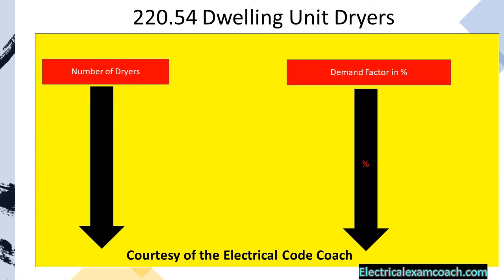When we get to table 220.54, we're always going to read our black bold heading to make sure we're in the right table. We're going to start on the left-hand side and find our number of dryers, then use a straight edge and come over to find our demand factor in percentage. You have to be very careful with these titles — sometimes they're listed as a replacement value and just say 'demand,' and in other tables it'll say 'demand factor in percentage,' which is just a multiplier.